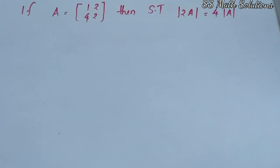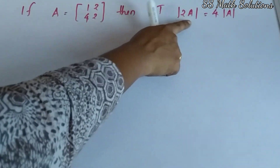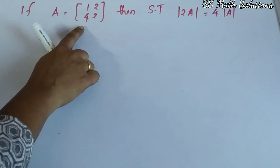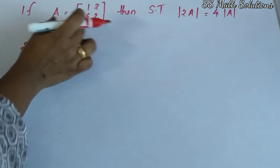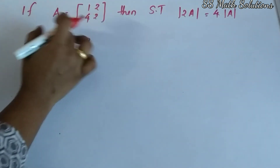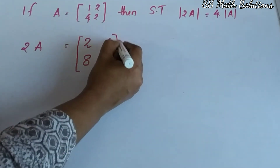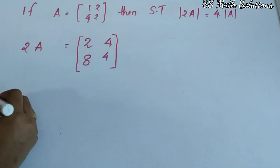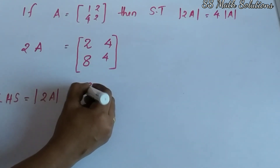Here is our next question: if A is equal to the matrix [1, 2; 4, 2], then show that determinant of 2A is equal to 4 times determinant of A. There are two parts — LHS and RHS. First we find the LHS part. Since 2A is required, we find it by scalar multiplication: 2 into [1, 2; 4, 2] gives [2, 4; 8, 4]. This is our matrix 2A. Now we need its determinant, so the determinant of 2A equals the determinant of [2, 4; 8, 4].